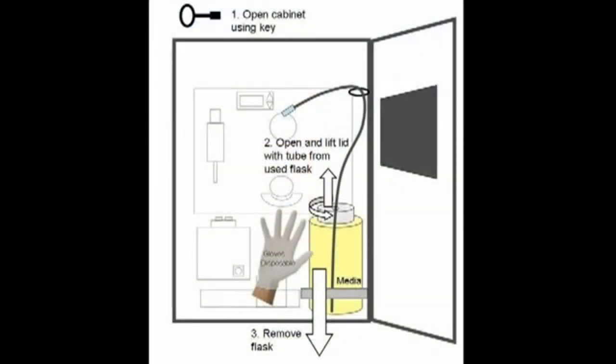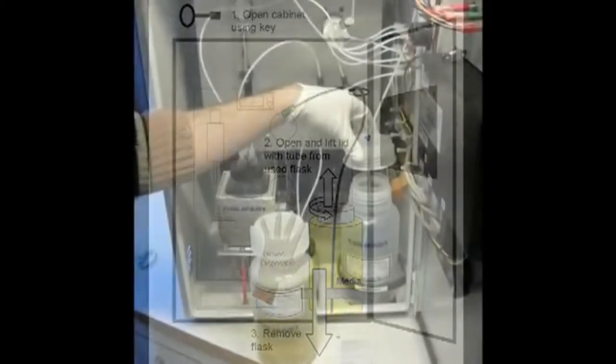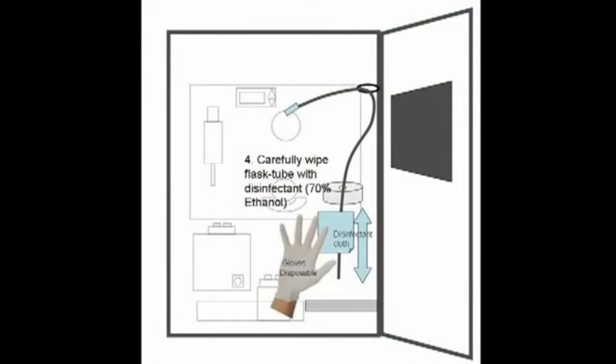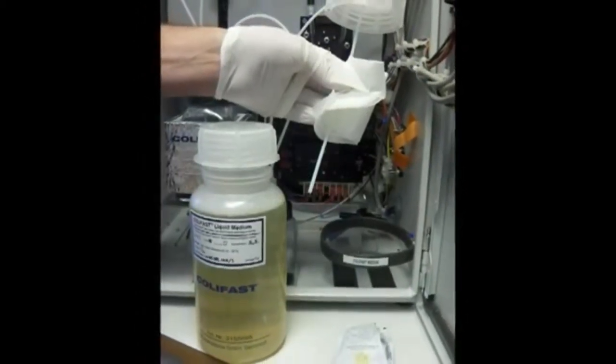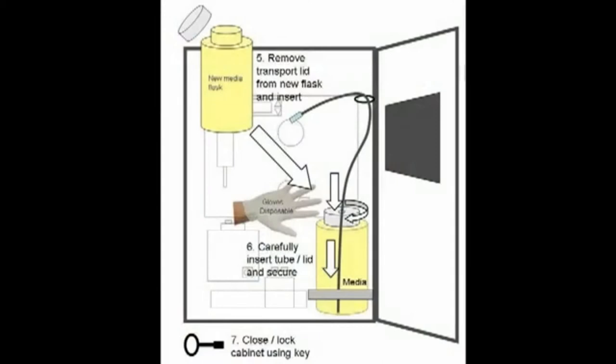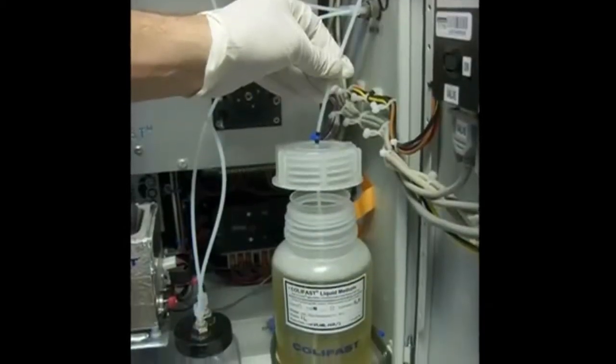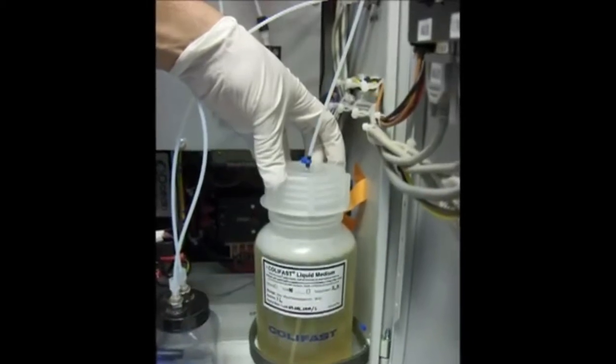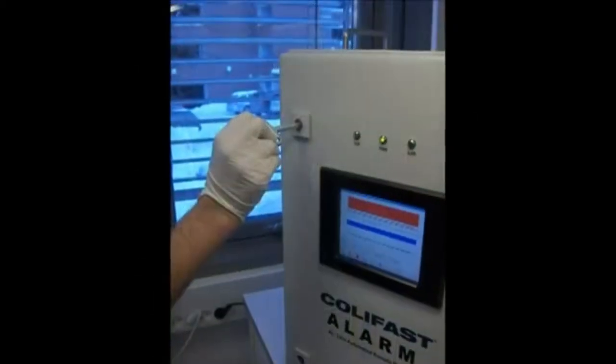Open the cabinets. Then open and lift the lid with the tube from the used and empty growth media flask and remove the old flask. Now, carefully clean the flask tube by wiping with a disinfectant tissue. Remove transport lid from new growth media flask and insert it into the holder inside the cabinet. Carefully insert the growth media flask tube into the new media flask and make sure the lid is being secured. Close the cabinet door.